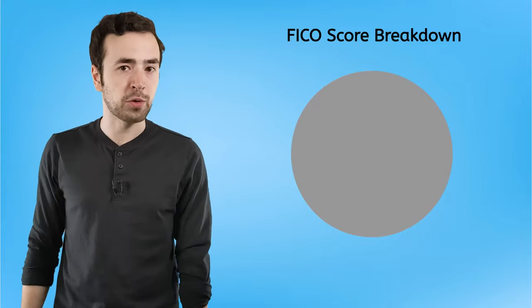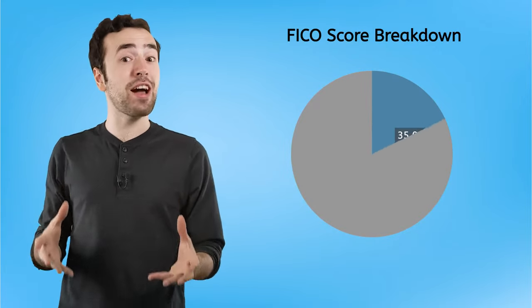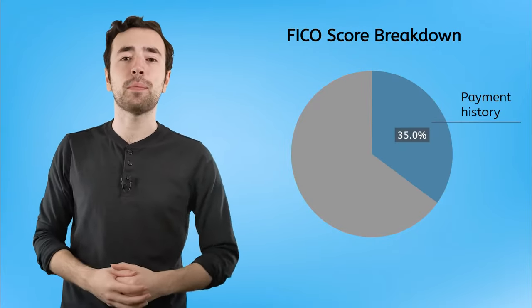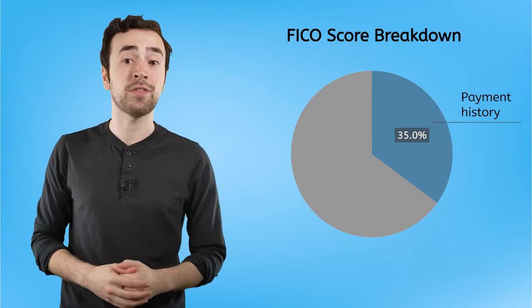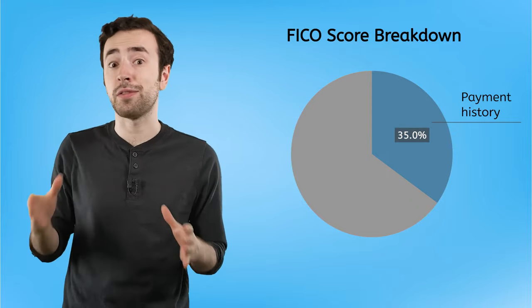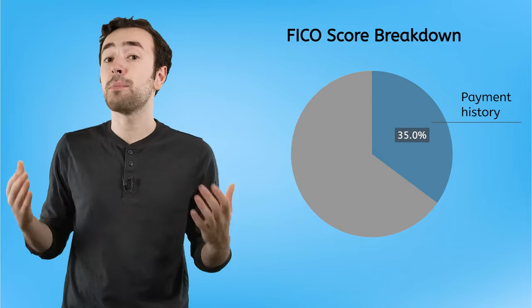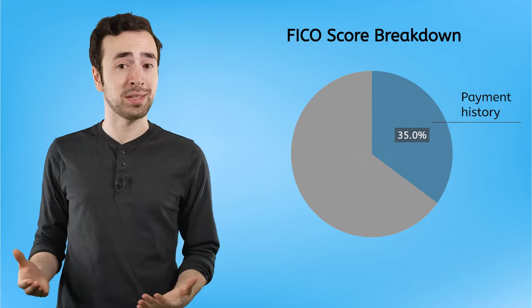With a FICO score, about 35% of the score is determined by your payment history. Avoiding late payments is the key to this one. If lenders see a long history of on-time payments, then they're much more confident that this pattern will continue.